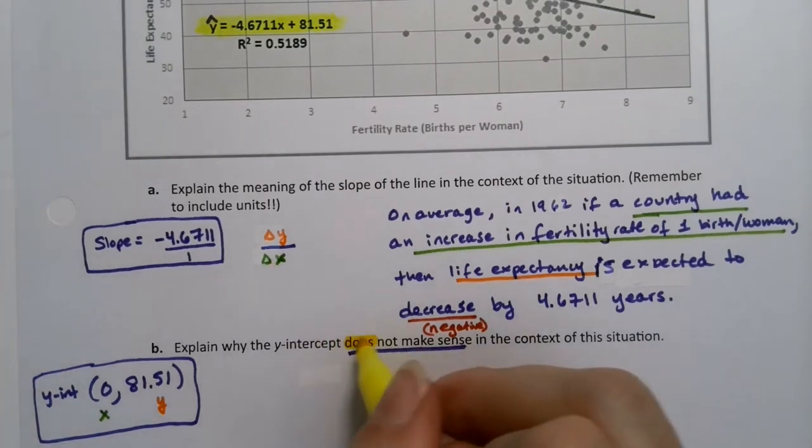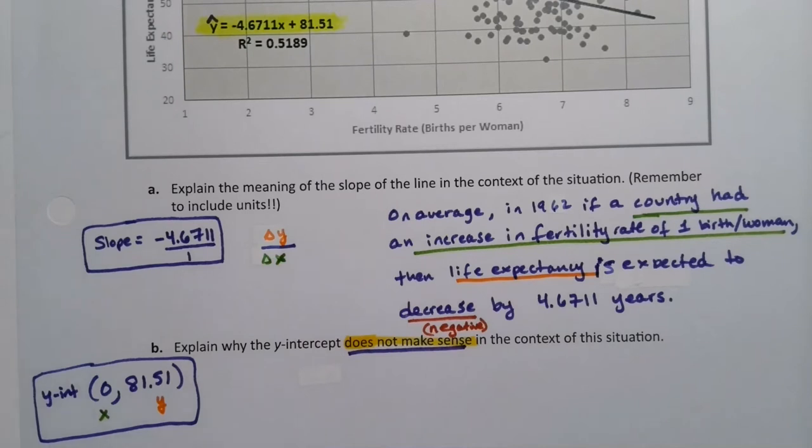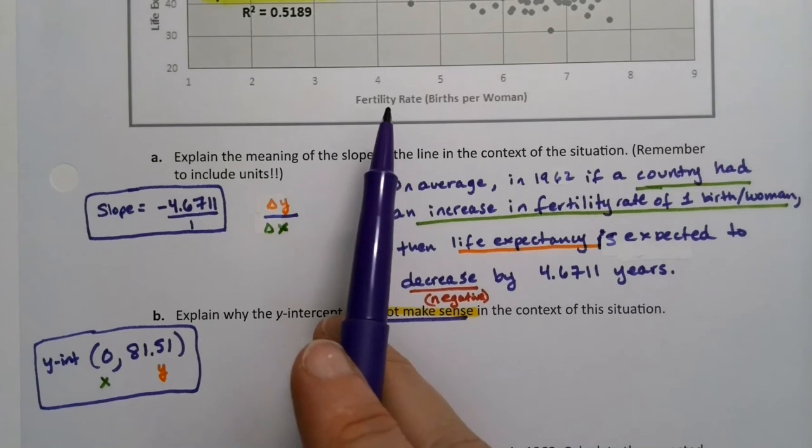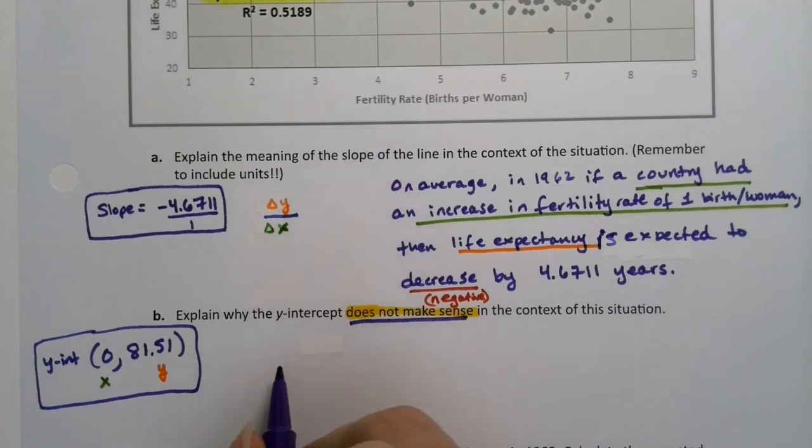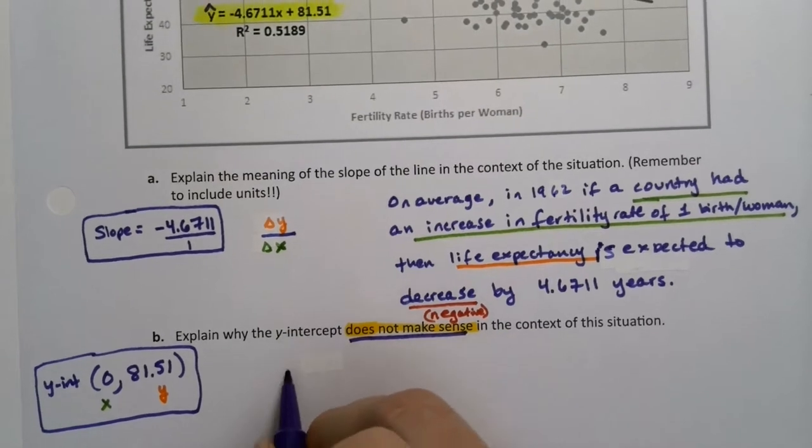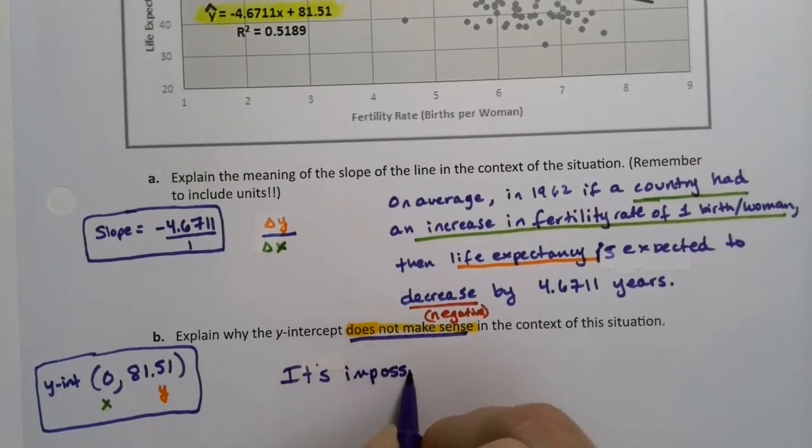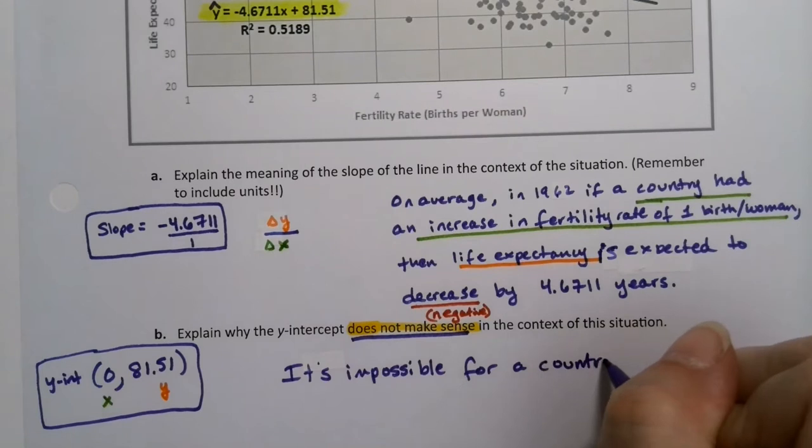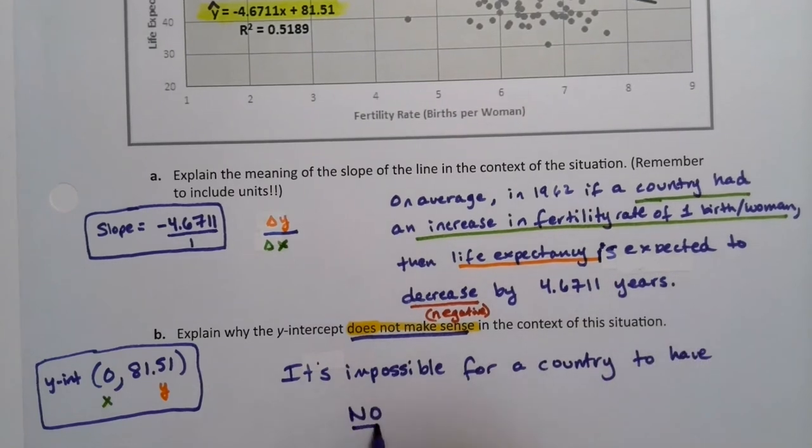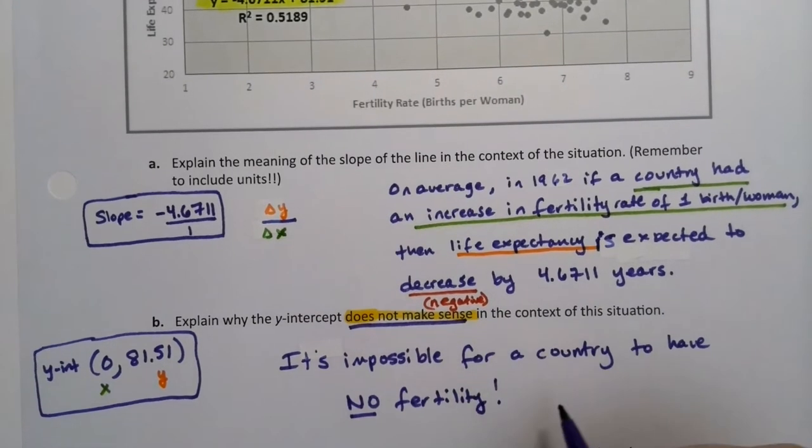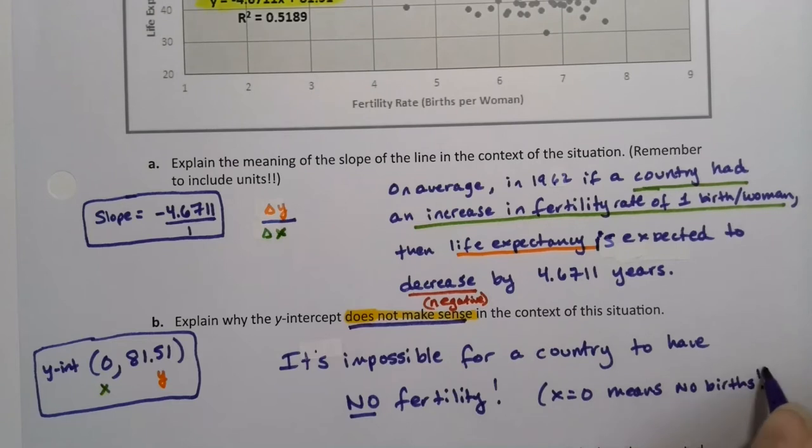So, that doesn't make any sense, and that's exactly why I asked to explain why it doesn't make sense, because it doesn't. And I kind of started up short when I realized there was a problem, because you wouldn't have a country with fertility rate zero. That means there's no babies being born in your country, which means you're not really going to have a country very long. So, it's impossible for a country to have no fertility. The x is zero as a problem. Because if x is zero, means no births per woman. And that's not possible.